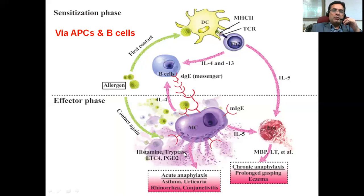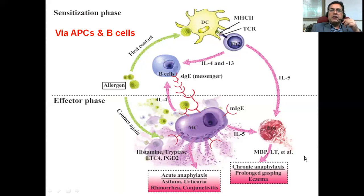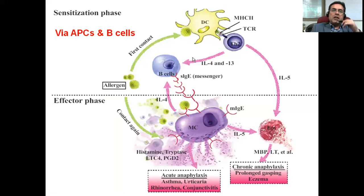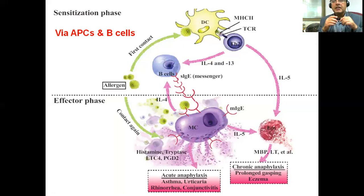This releases different cytokines, histamine, tryptases, and prostaglandins that give you the sensation of pain. It causes acute anaphylaxis, asthma, urticaria, angioedema, and conjunctivitis. It can also cause chronic anaphylaxis if the T helper 2 cells release interleukin-5, which would directly affect the eosinophils to produce eczema or prolonged wheezing in some cases. So this is the mechanism of allergies and the involvement of the mast cells — how these hypersensitivity reactions are so fast and sometimes so dangerous, because these hypersensitivity reactions sometimes can kill individuals if the response is very robust or very much exaggerated.